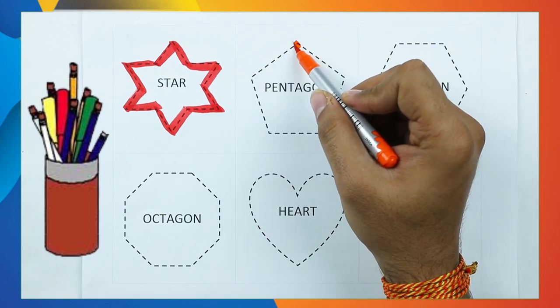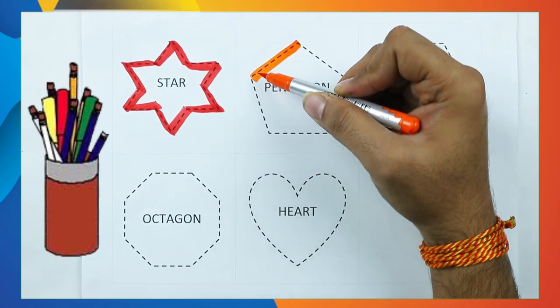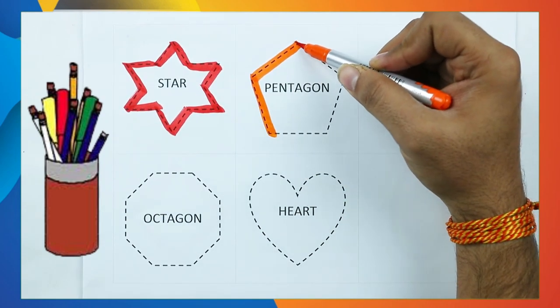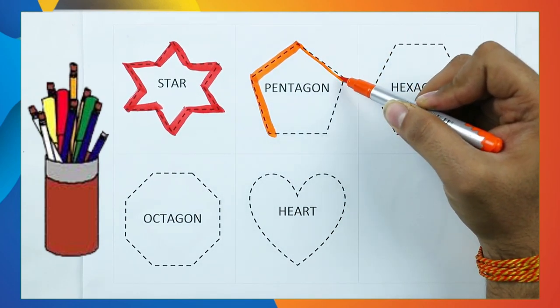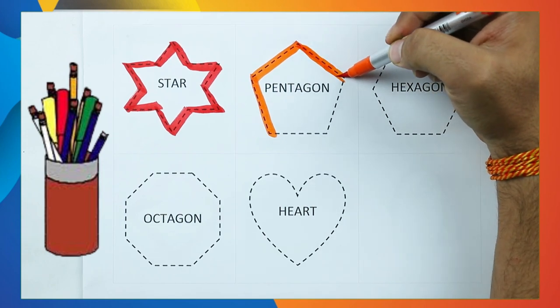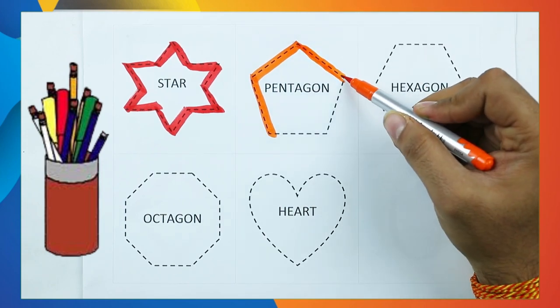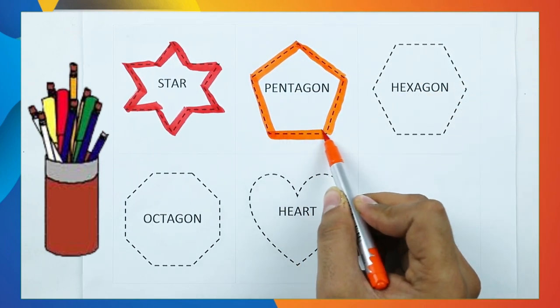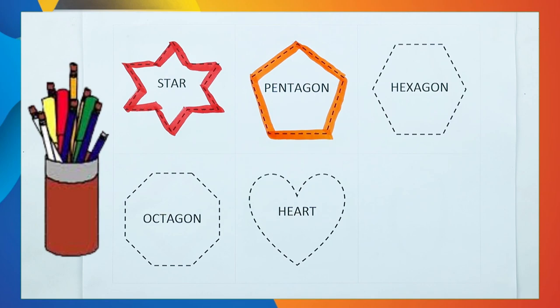Pentagon. One line, two line, three line, four line, five line. It's a pentagon.